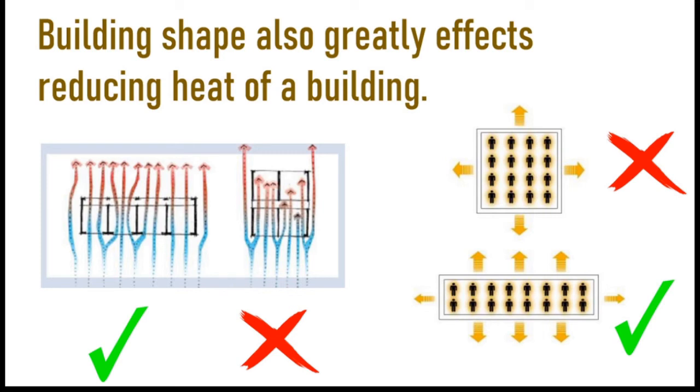Thinner houses have extra advantage other than cooling. That is, light penetration will be better in thin long buildings. Therefore you don't have to switch on lights in daytime if you live in thin long house. It will save your electricity. It means it will save your money.